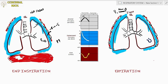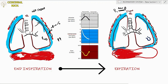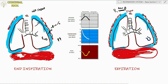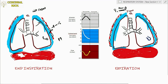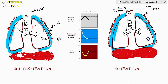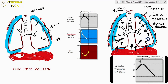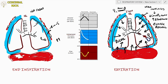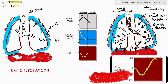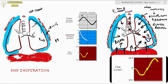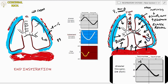Expiration is passive in nature, driven by elastic recoil of the lungs. Over-distended alveoli have lower surfactant concentration, increasing surface tension and causing inward recoil, aided by elastin fibers. When lungs are maximally inflated, compliance decreases and elastance increases. This elastic recoil generates positive alveolar pressure compared to atmosphere, driving flow from lungs to outside until alveolar pressure returns to zero and flow ceases.